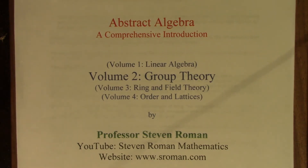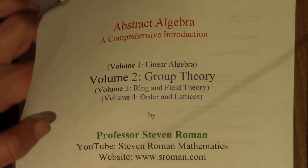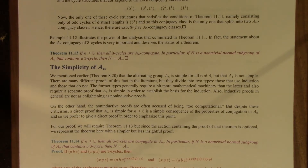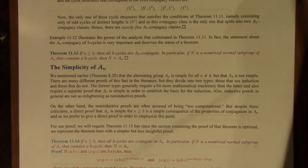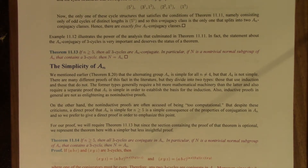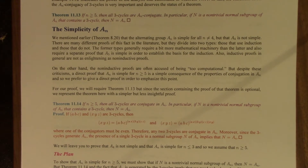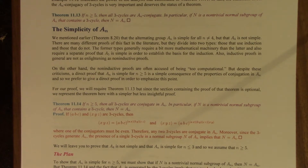Hello, everyone. This is Professor Roman. Let's continue the group theory lectures. We've been talking about the family of symmetric groups in the last two lectures, and I want to conclude that discussion by proving that the alternating groups A_n are simple, as long as n is not equal to 4. That's the only exception. Recall that a group is simple if its only normal subgroups are the trivial subgroup and the full group itself — so no non-trivial proper normal subgroups.